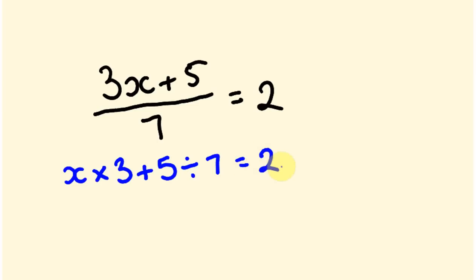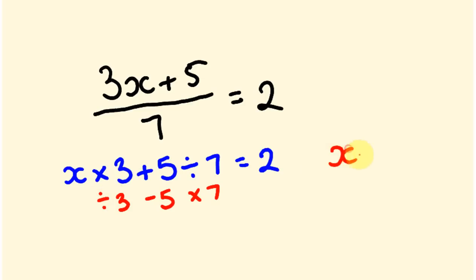To find x, we run in the reverse direction and do the opposite operations. We start with 2, and instead of dividing by 7 we times by 7, instead of adding 5 we take away 5, and instead of multiplying by 3 we divide by 3. So: 2 × 7 = 14, minus 5 = 9, divided by 3 = 3. So x = 3. We can check by substituting back: 3 × 3 = 9, plus 5 = 14, divided by 7 = 2. Correct!